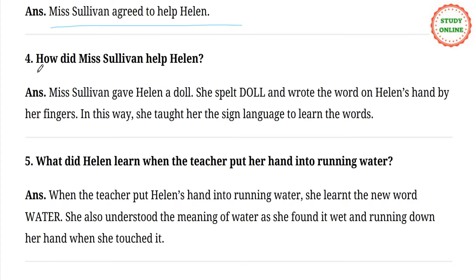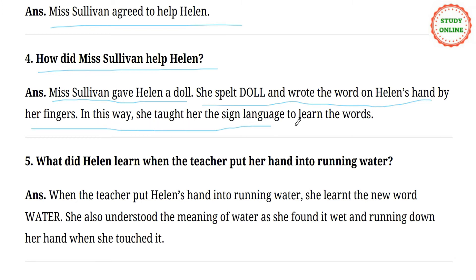Next question: How did Ms. Sullivan help Helen? She taught her by spelling words on her fingers using sign language. The first word Helen learned was 'doll.' Ms. Sullivan placed a doll in Helen's hand and spelled D-O-L-L on her fingers. In this way, Helen also learned sign language.